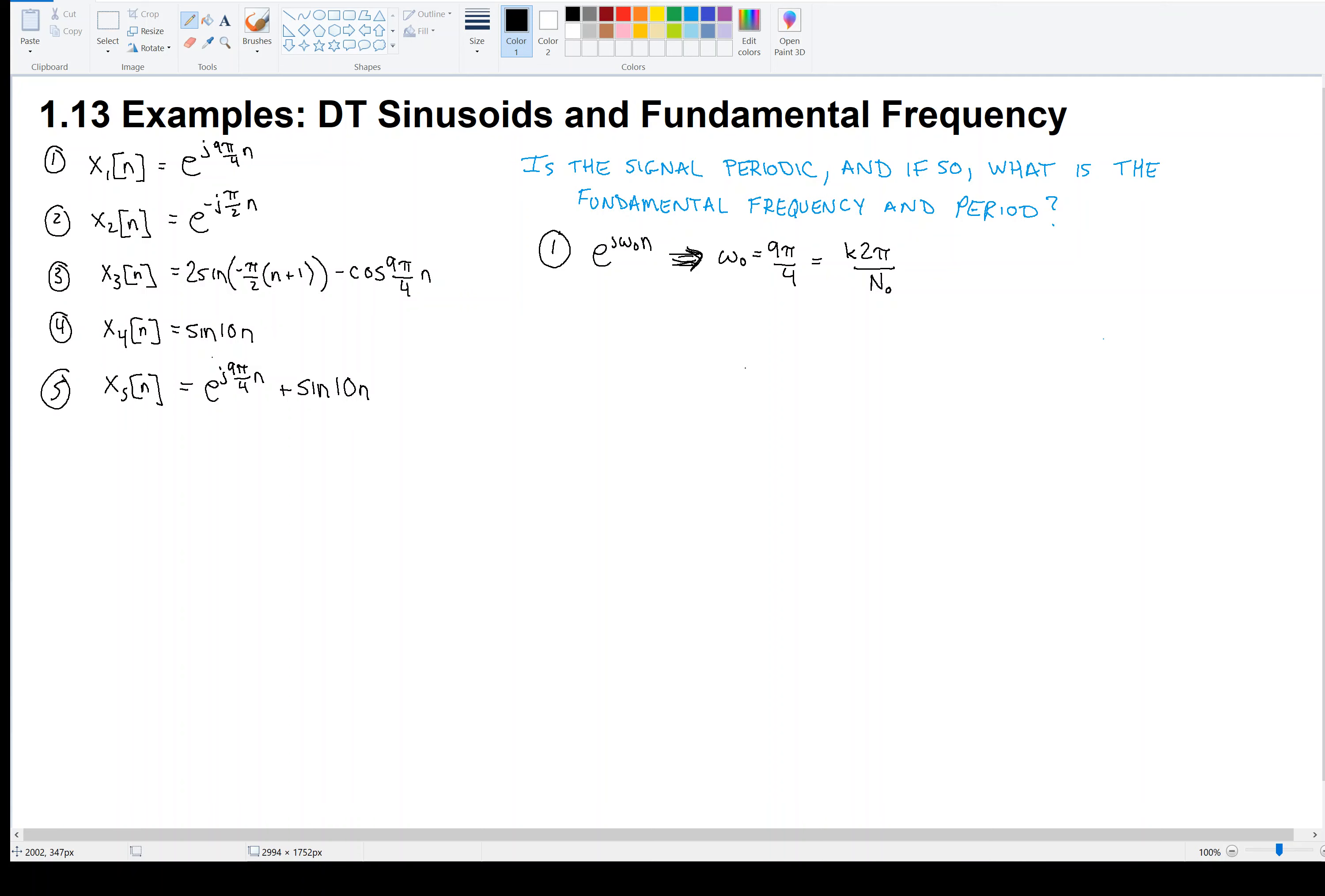We've got this constant 9π over 4, and we want to be able to write it as an integer over an integer times 2π. Right away, we see that the π's cancel. That's crucial because we have to have an integer relationship. If you like, you can multiply by 4 on both sides, and so we see that 9 has to be equal to k over n₀ times 8. So the question is, can I pick integers k and n₀ so that when I take k over n₀ times 8, I get 9?